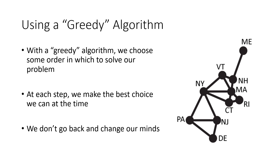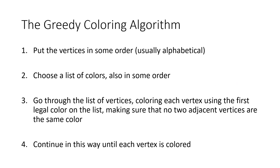The idea of this greediness is that at every step you ask: where I'm at right now on the problem, what's the best choice? What's the cheapest option I can take? I take it and I don't go back and re-examine it. Specifically, the greedy coloring algorithm puts the vertices in some order — usually alphabetical — and chooses a list of colors in some order. Then we go through the list of vertices, coloring each one using the first legal color on the list, meaning no two adjacent vertices share a color. We never use a new color unless we absolutely have to.